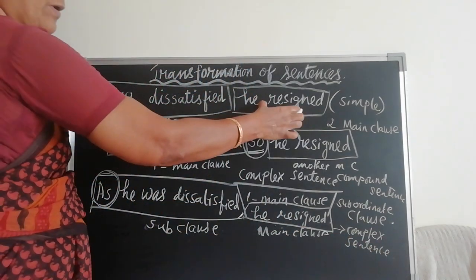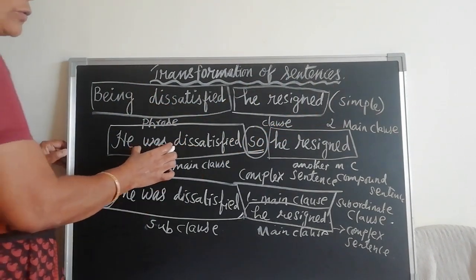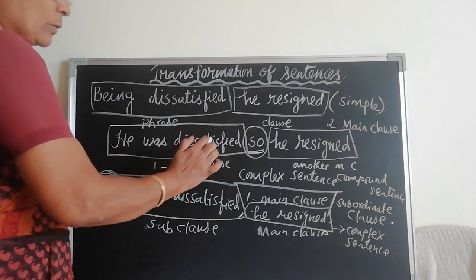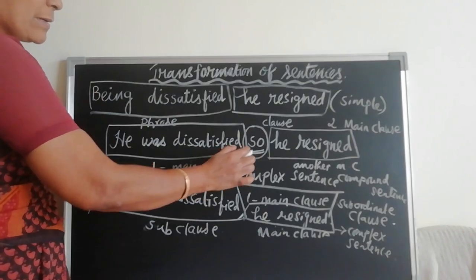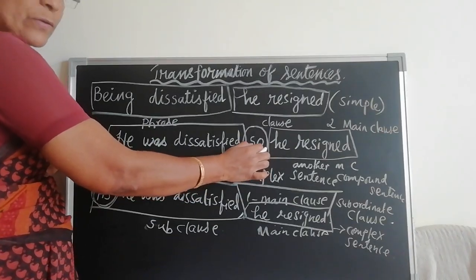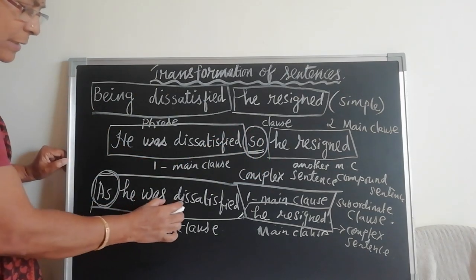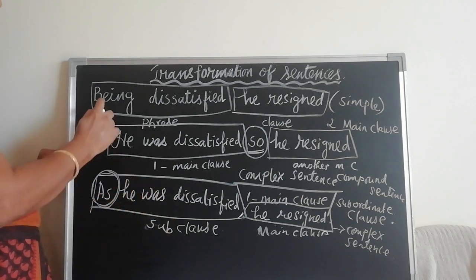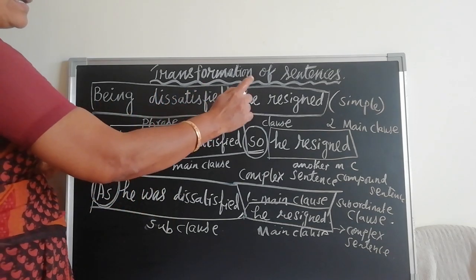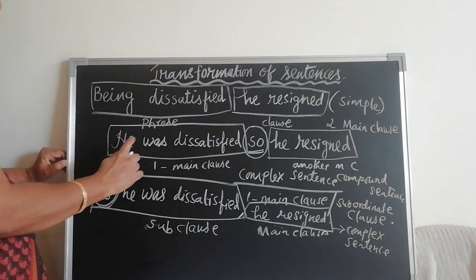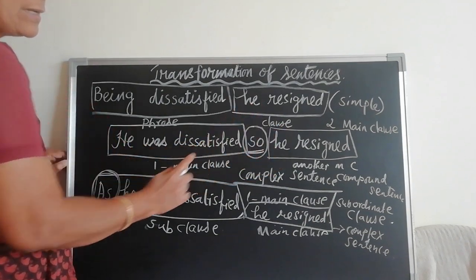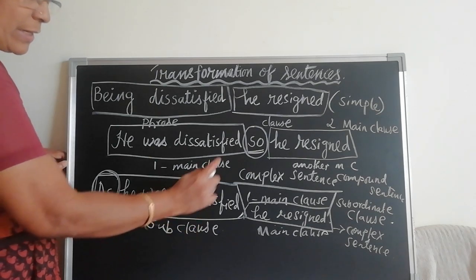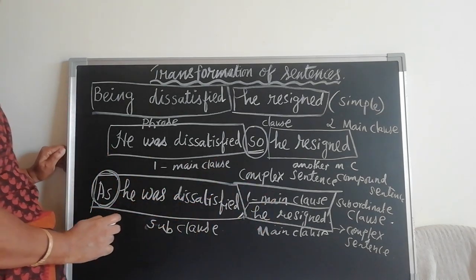Phrase with one main clause — so it is a simple sentence. Two main clauses connected by a coordinate conjunction — so it is a compound sentence. Subordinate clause with main clause — so it is a complex sentence. 'Being dissatisfied, he resigned' is a simple sentence. 'He was dissatisfied, so he resigned' is a compound sentence. 'As he was dissatisfied, he resigned' is a complex sentence.